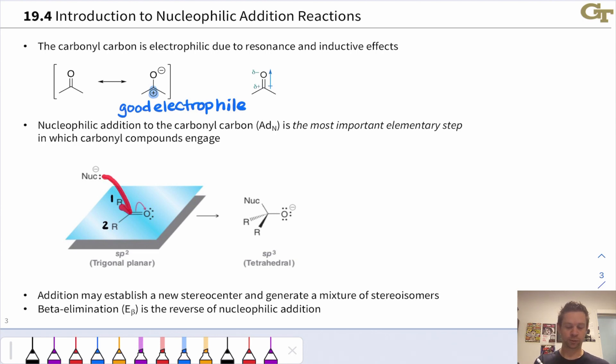The nucleophile forms a sigma bond to the carbonyl carbon, and the CO pi electrons head up to oxygen. This is a classic AD sub N elementary step.